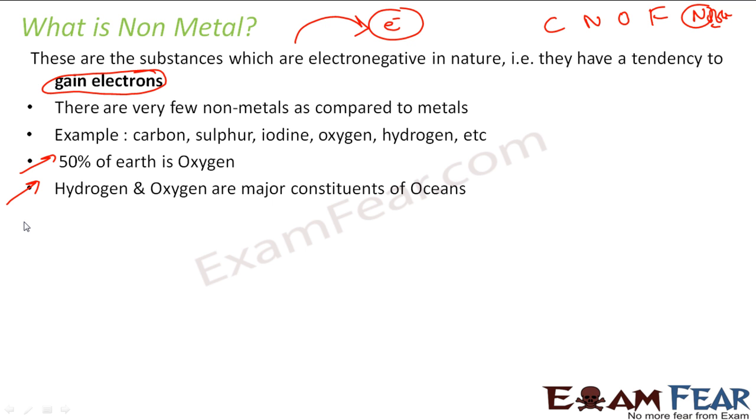There are lot of metals, for example, sodium, potassium, calcium, magnesium, iron, copper, zinc. But they are limited number of non-metals, but the quantity is more. 50% of the earth is oxygen. If you see ocean, they are all hydrogen and oxygen because they are all water.